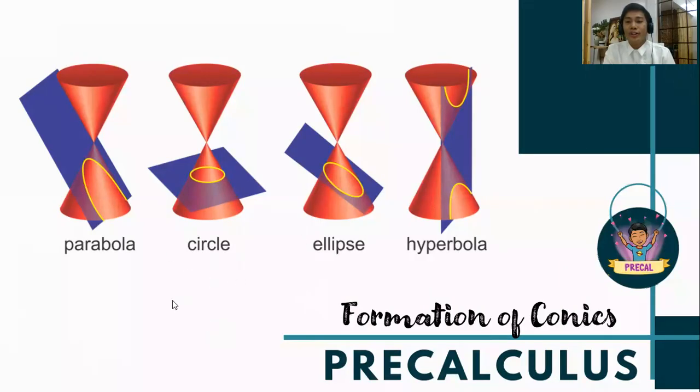So all in all, there are four. The circle and the ellipse are both not parallel to any of the generators. The parabola is parallel to one of the generators, while the hyperbola is parallel to both generators.